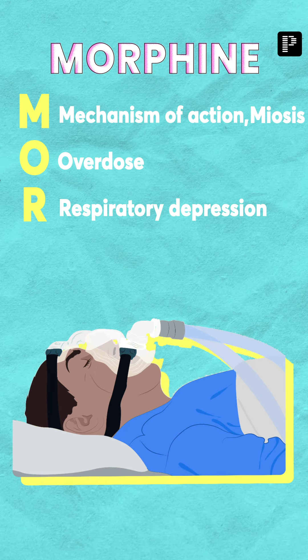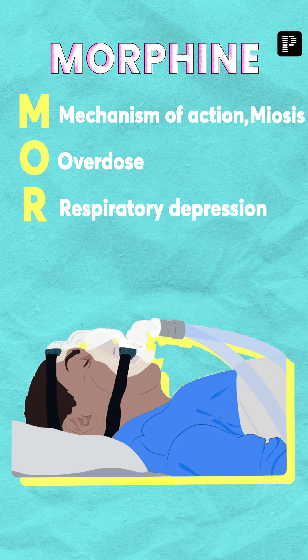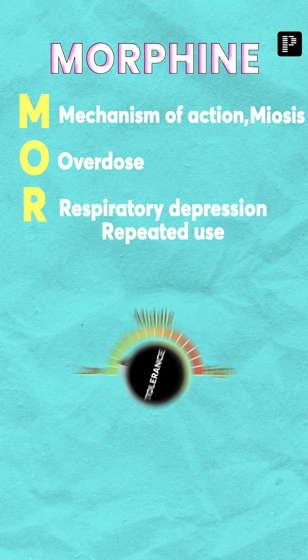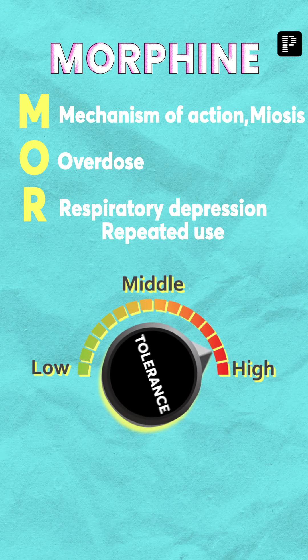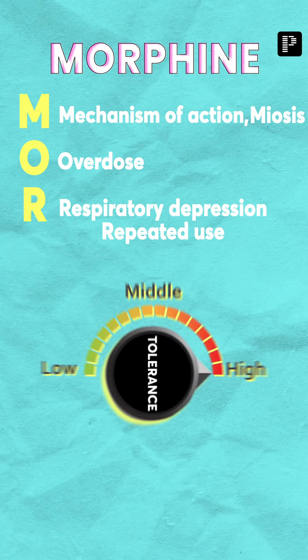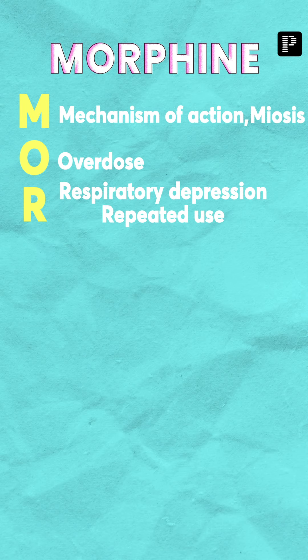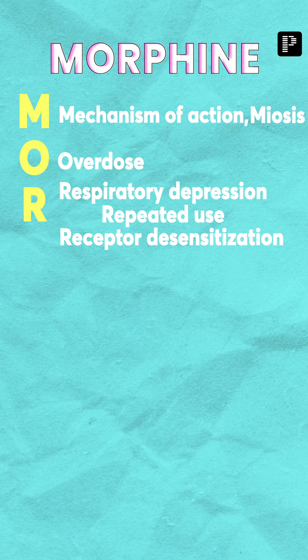The second important aspect of R is repeated use — if you use morphine repeatedly there is a risk of tolerance. The reason for tolerance is receptor desensitization, so you can remember one more R for receptor desensitization.